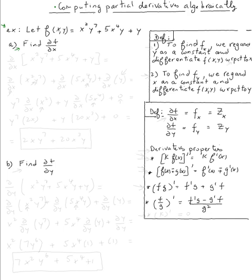First, you need to get familiar with the notation. All these notations are the same: partial f with respect to x is the same thing as f sub x, which is the same thing as z sub x. The definition says to find f sub x, we regard y as a constant and differentiate f(x,y) with respect to x.